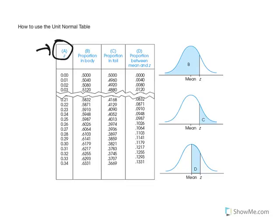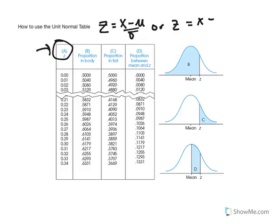Based on what we learned in the last chapter, to transform an x-value into a z-score, we would use the equation z is equal to x minus mu divided by standard deviation. For a sample, z is equal to x minus m divided by s. Once you transform a score into a z-score, you enter the table using column A and locate your z-score.